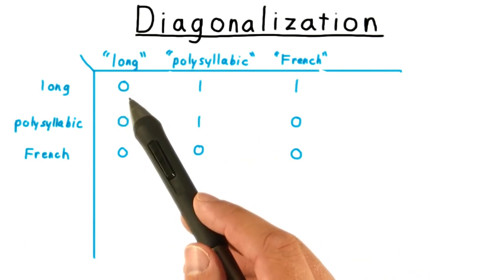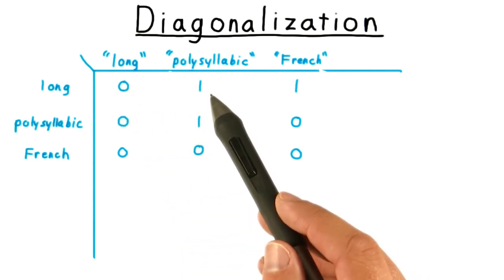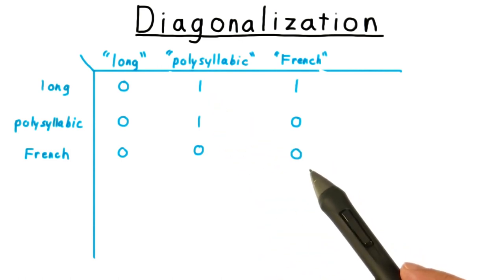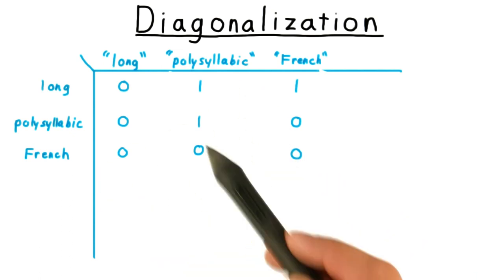For instance, long is not a long word, so I've written a zero. Polysyllabic is a long word, so I've written a one. French is not a French word, it's an English word, so I've written a zero, and so forth.